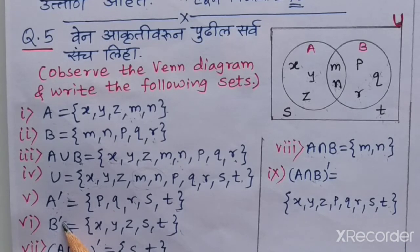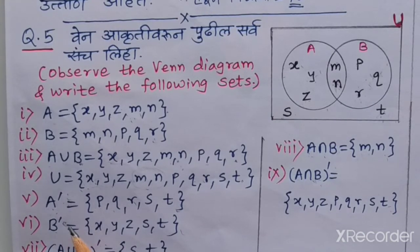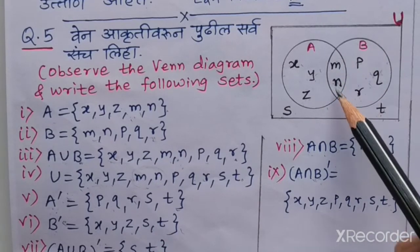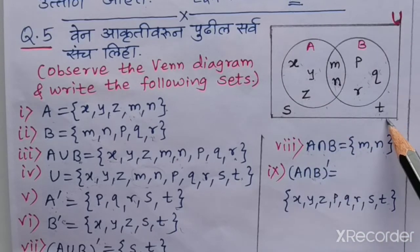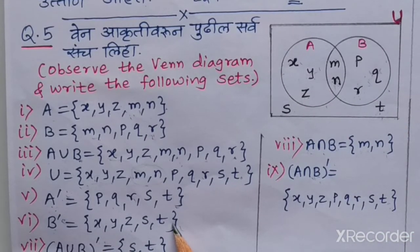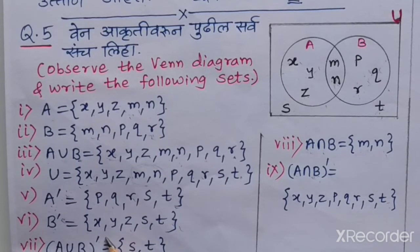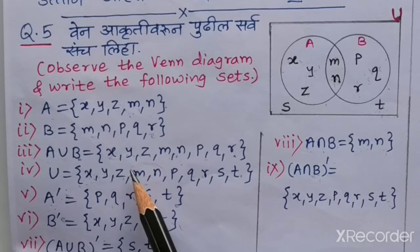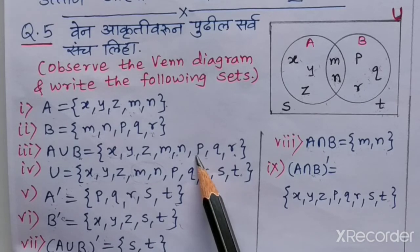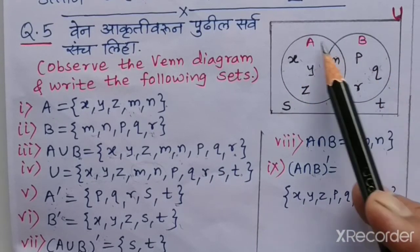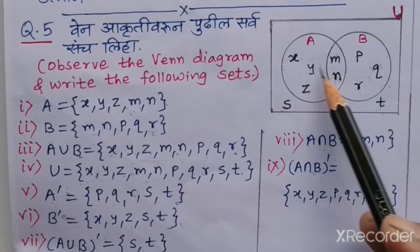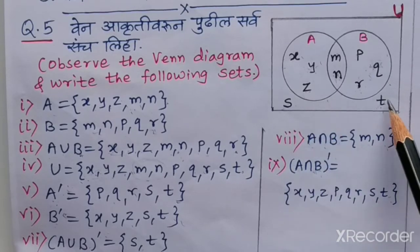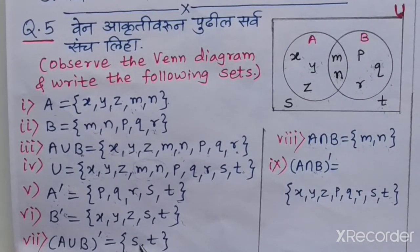Similarly, B' (complement of B) contains elements in U but not in B. Neglecting set B, B' = {X, Y, Z, S, T}. For (A∪B)', the complement of A∪B, we neglect both circles and write only the elements in U but not in A∪B: (A∪B)' = {S, T}.